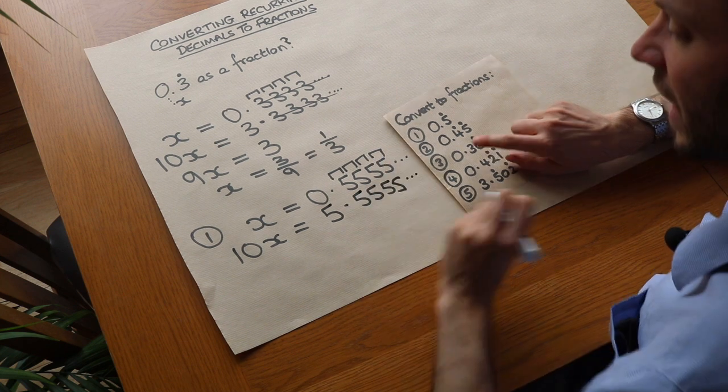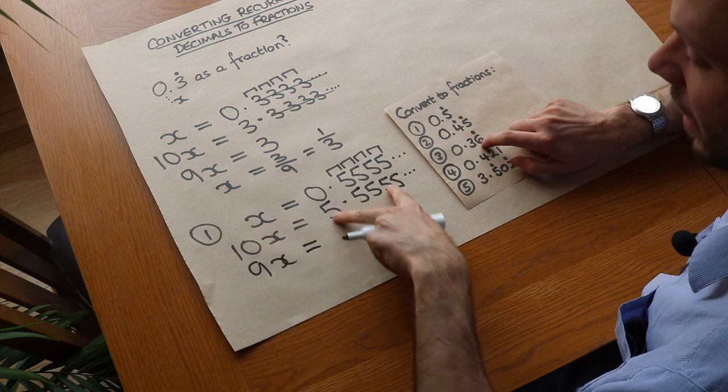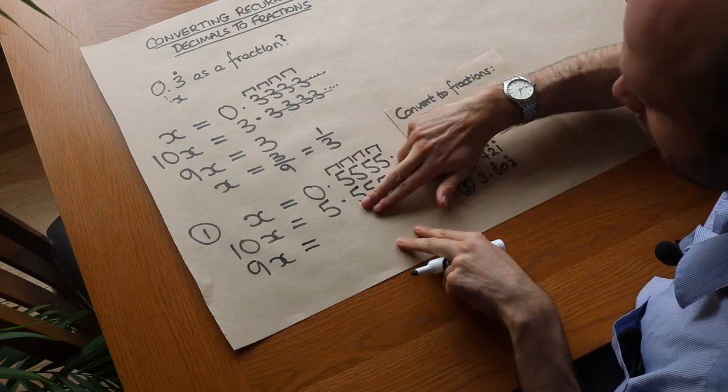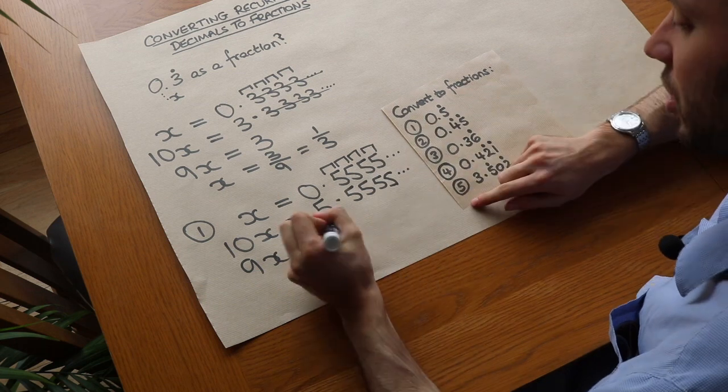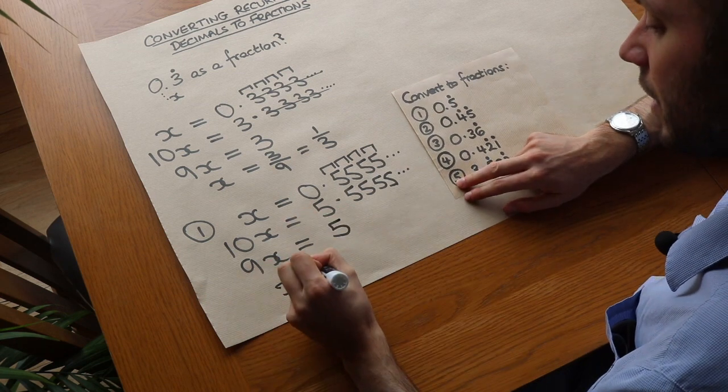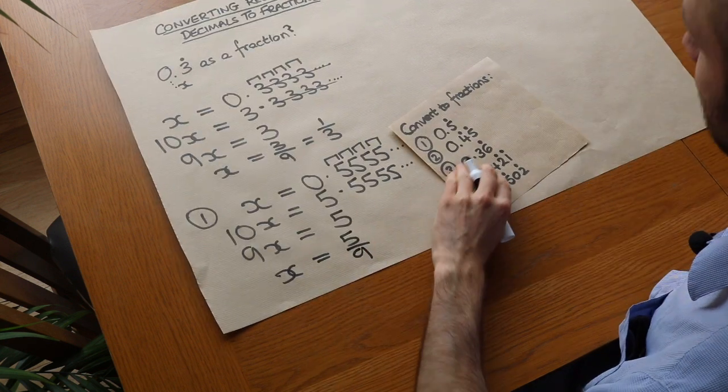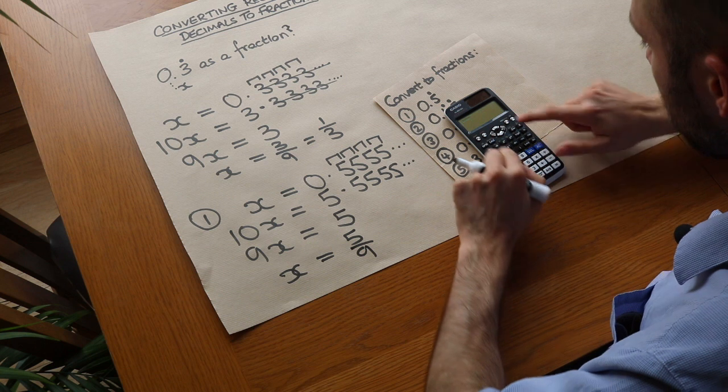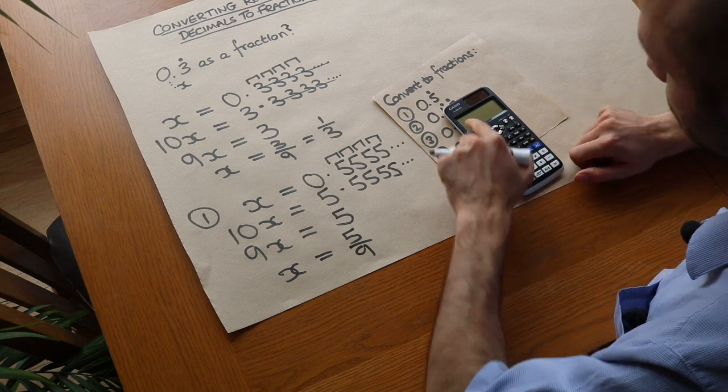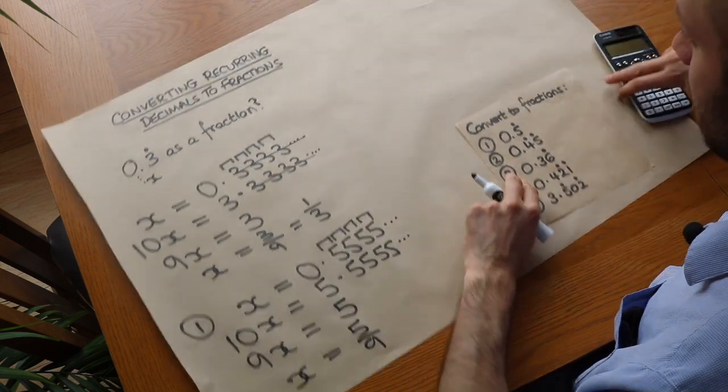And then the magic happens when we subtract. So we do that minus that we get 9x. And that minus that well these are all going to get wiped out when we subtract them leaving just 5 minus 0 which is 5. And then if we divide both sides by 9 x is equal to 5 over 9. And we can always check if we do have a calculator do 5 divided by 9 and we get 0.555555.